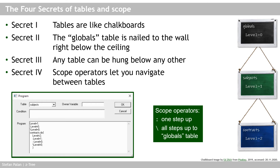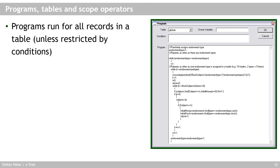Congratulations — you now understand tables and scope in Z3. Let's look at a slightly more complex, realistic program, focusing on which tables variables are located in and how to access them using scope operators. Remember, each program runs in a table — this one runs in the globals table. I often run programs in the globals table because it always has only one row, meaning the program runs only once — useful when calculating things that don't need separate calculation for each subject.